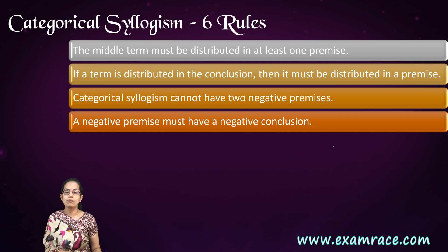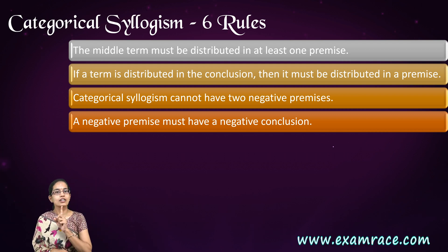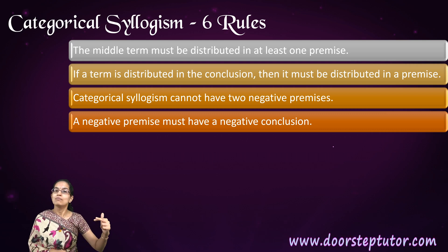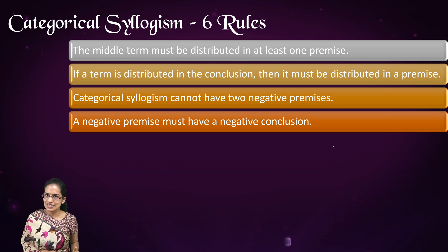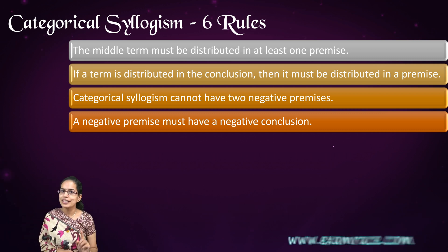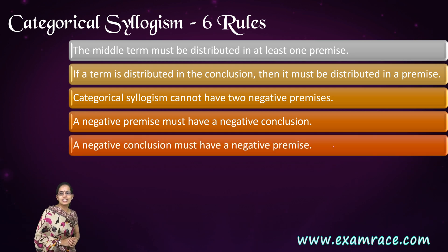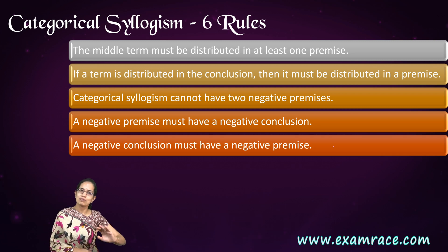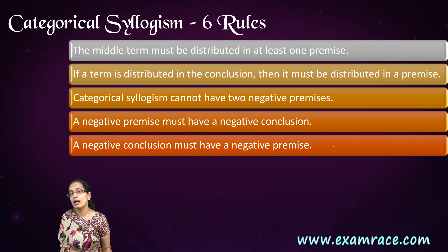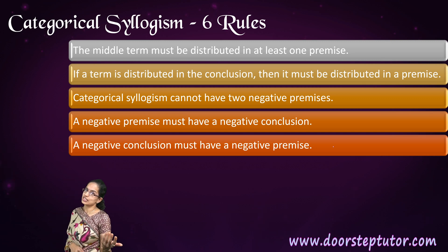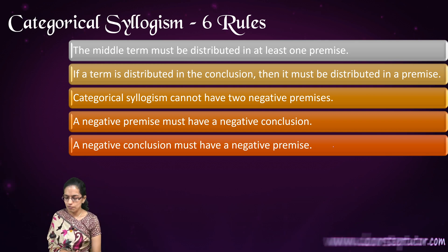The fourth rule is: if even one premise is negative, the conclusion will be negative. A good example is EIO — E means 'no,' I means 'some,' so the premises are 'no' and 'some,' but the conclusion is 'some not,' which is again negative. So even one negative premise means the conclusion tends to be negative. The fifth rule is the vice versa: a negative conclusion must have a negative premise — if the conclusion is negative, at least one premise was negative.